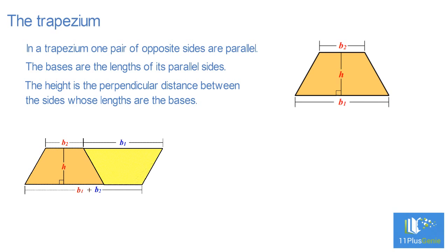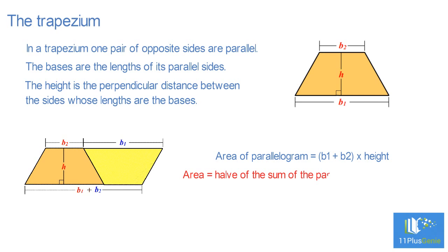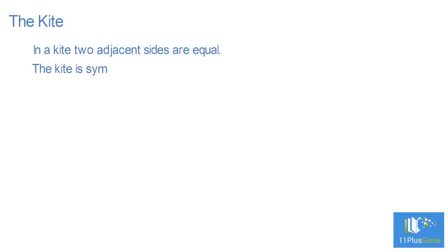It should fit perfectly to form a parallelogram. The base of this new parallelogram is B₁ plus B₂ and the height is H. The area of this parallelogram is (B₁ + B₂) times H. To find the area of one trapezium we must halve this — the area is half of the sum of the parallel sides times the height. In symbol form: A equals half of (B₁ + B₂) times H.